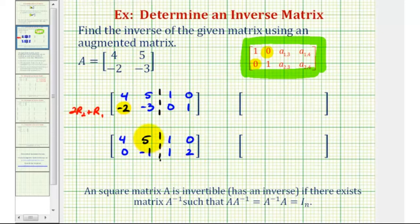Now let's obtain a 0 in this position here. Notice the element below the 5 is negative 1, which means we can obtain a 0 in this position if we replace row 1 with 5 times row 2 plus row 1. We also want this element here to be positive 1. So let's go ahead and replace row 2 with negative 1 times row 2.